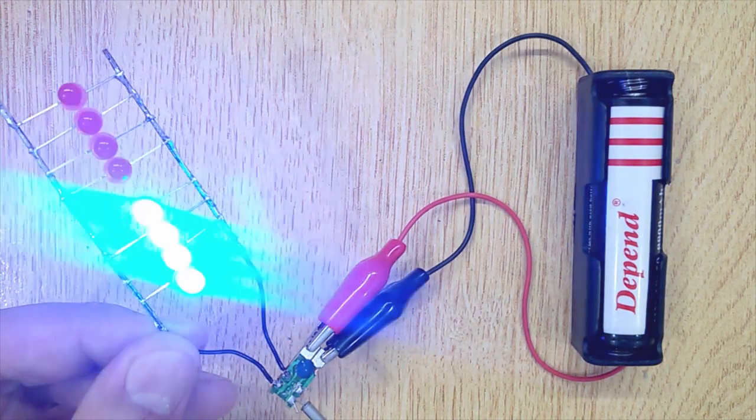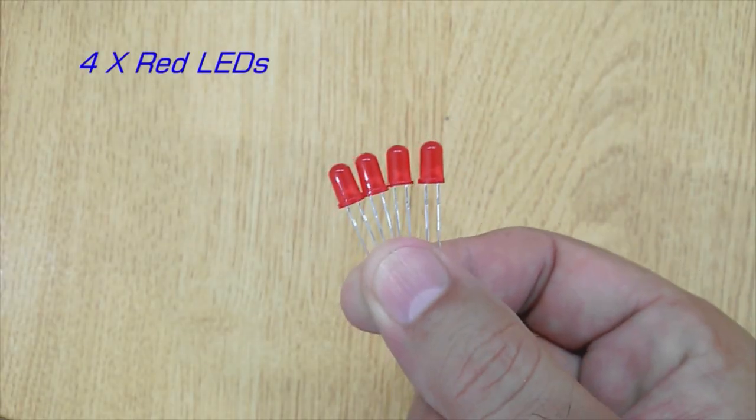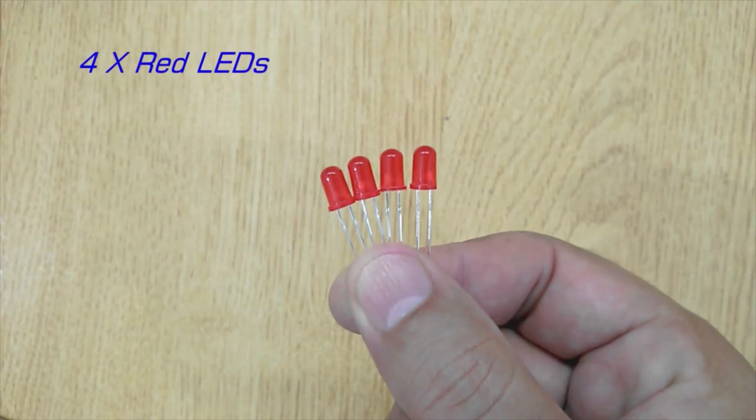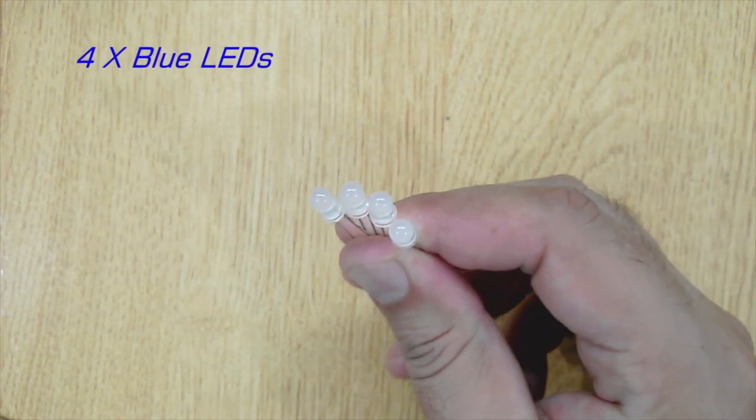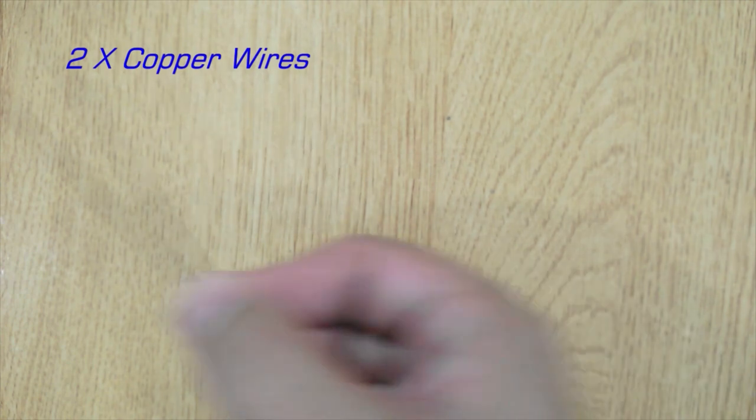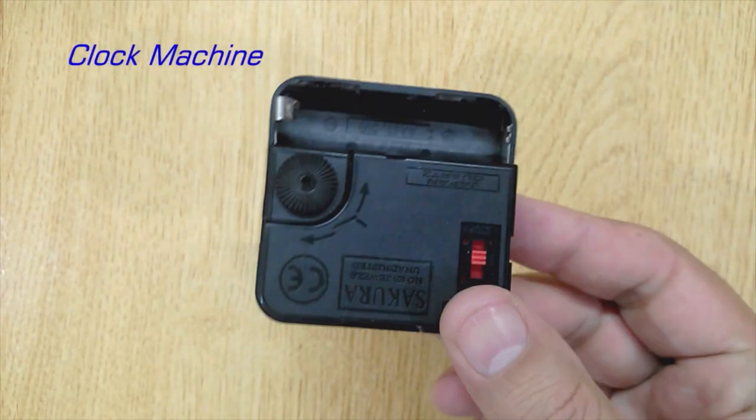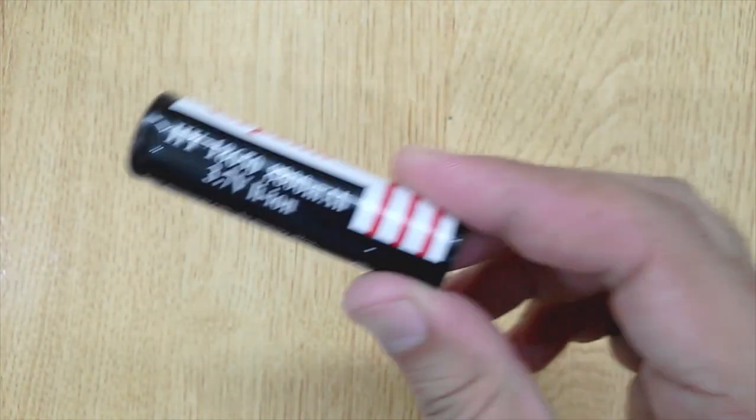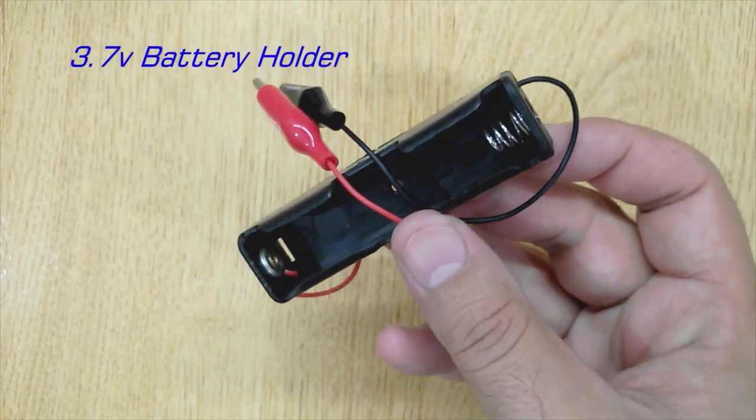To complete this project, the electronic components you will need: Red LEDs 4 pieces, blue LEDs 4 pieces, copper wires 2 pieces, old clock machine, 3.7 volt battery and 3.7 volt battery holder.